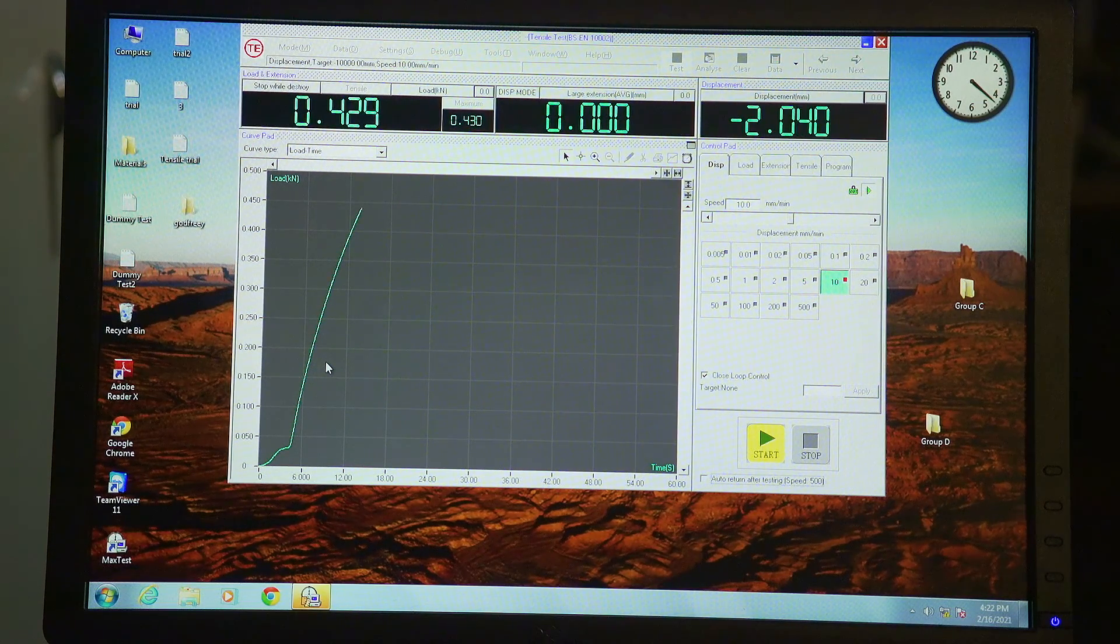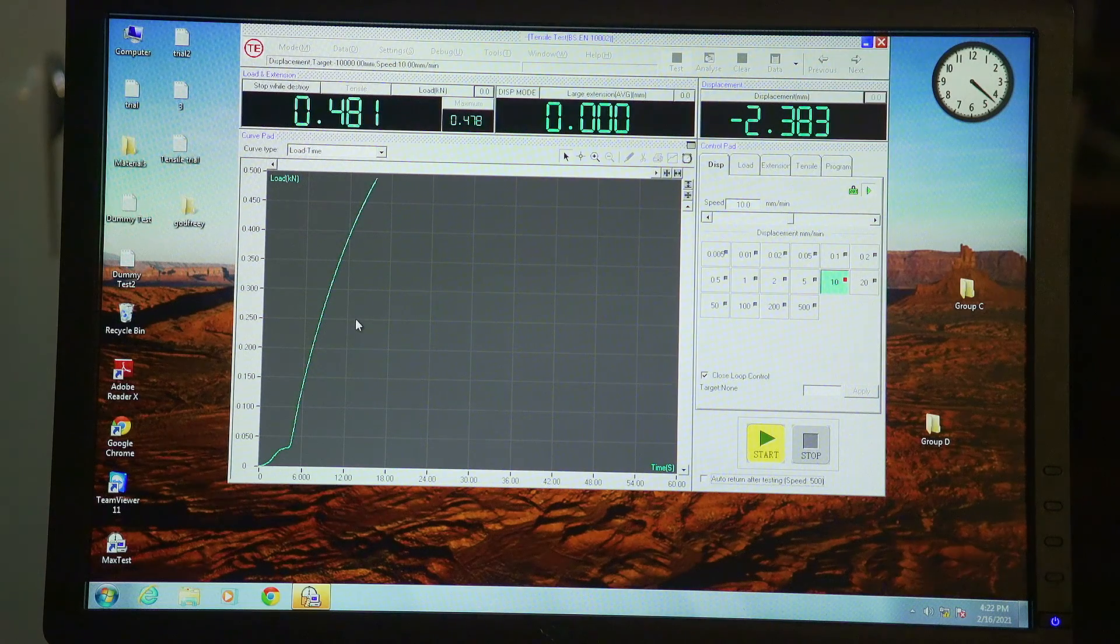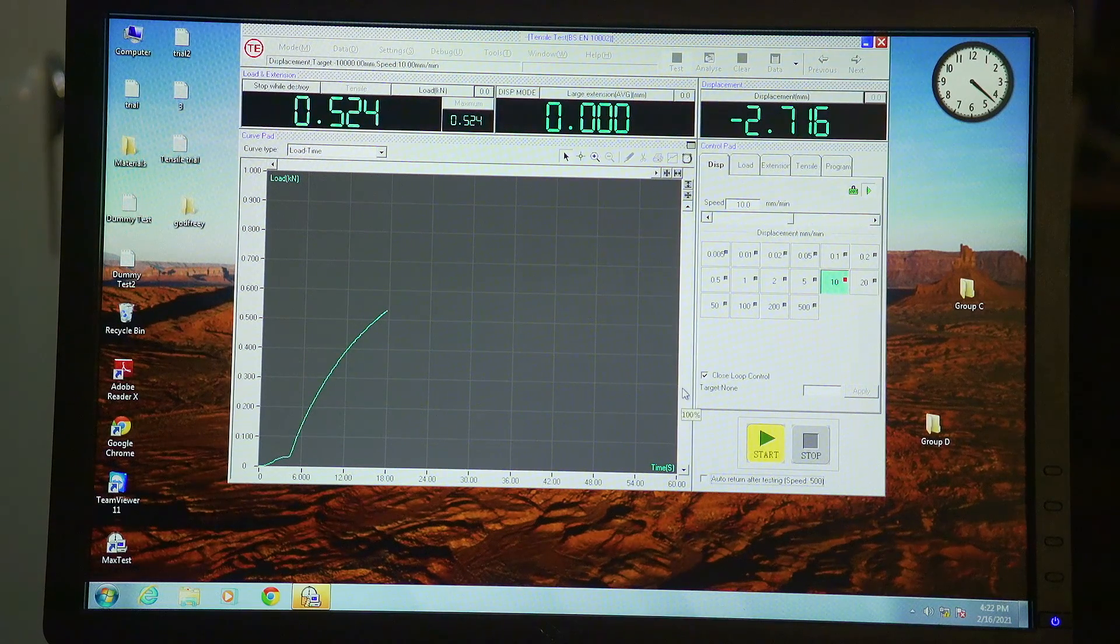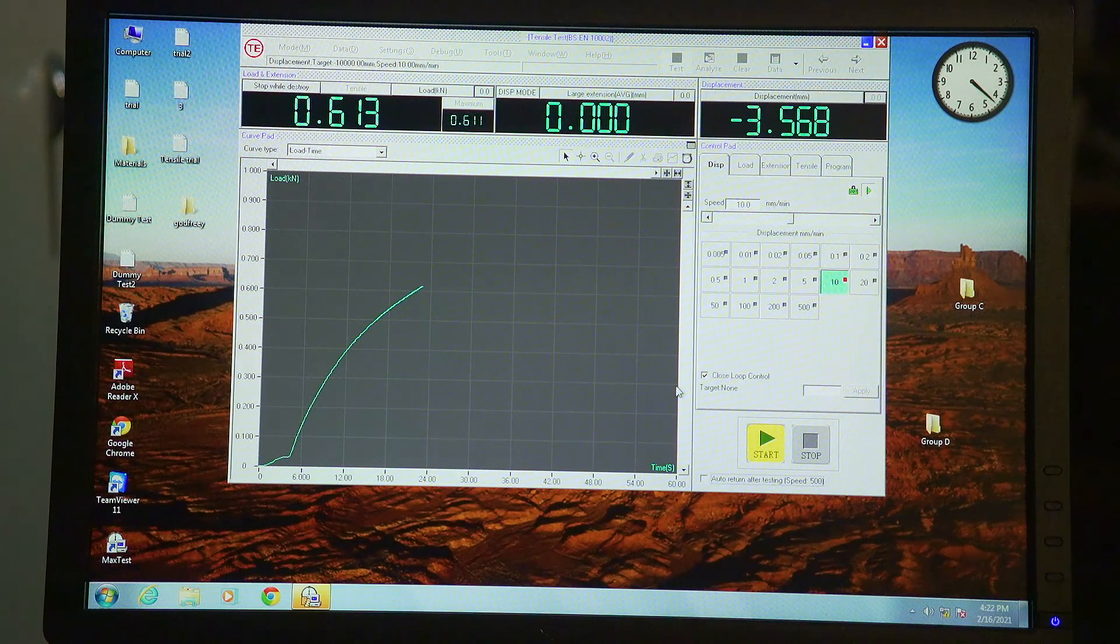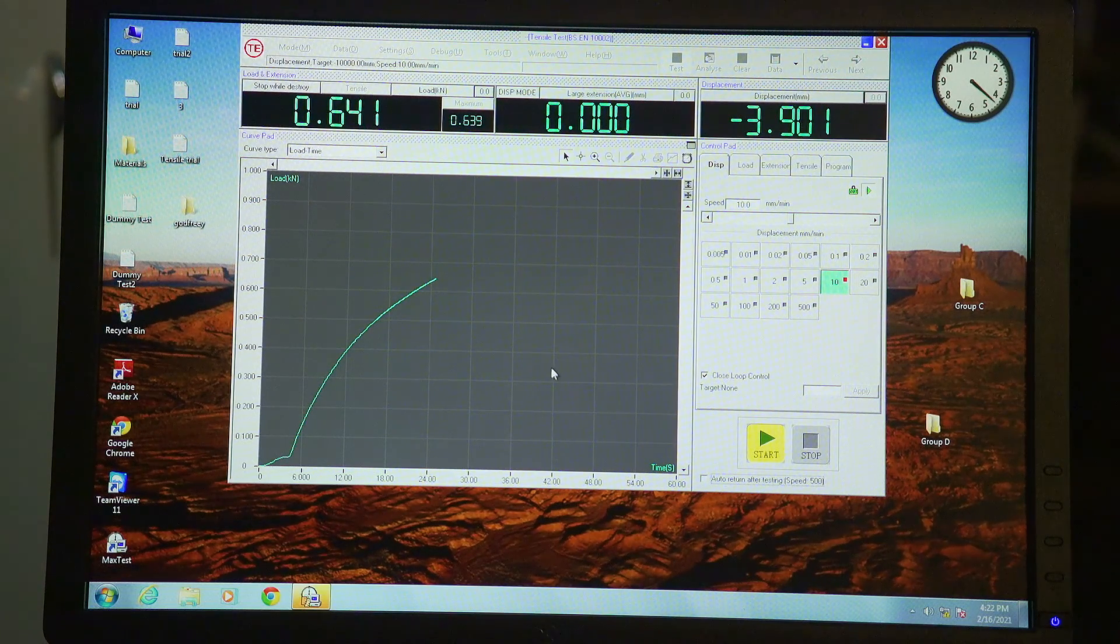And it also reaches a point which would be called the yield point at which I need to remove the extensometer. And it's about to reach that point now.